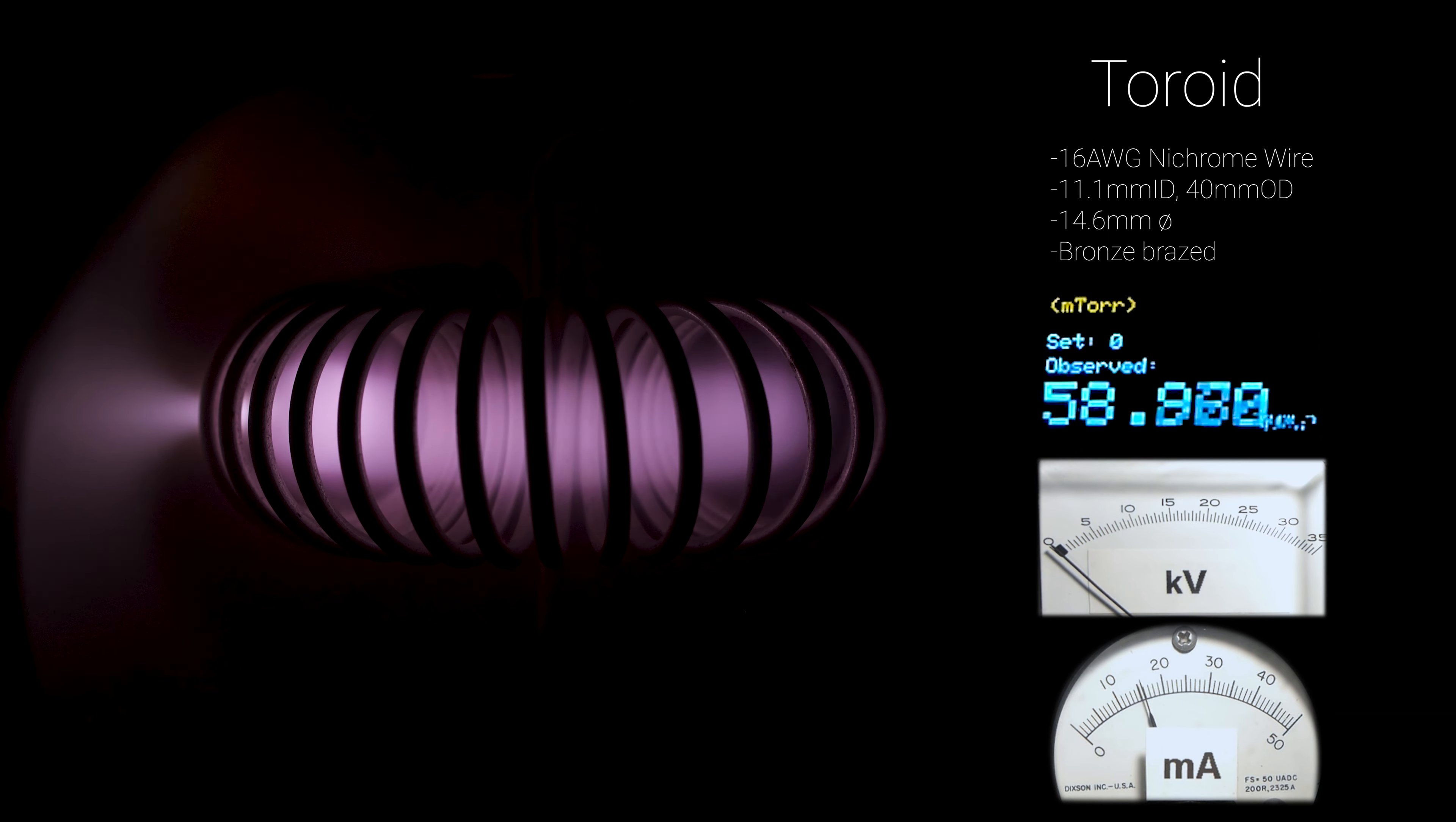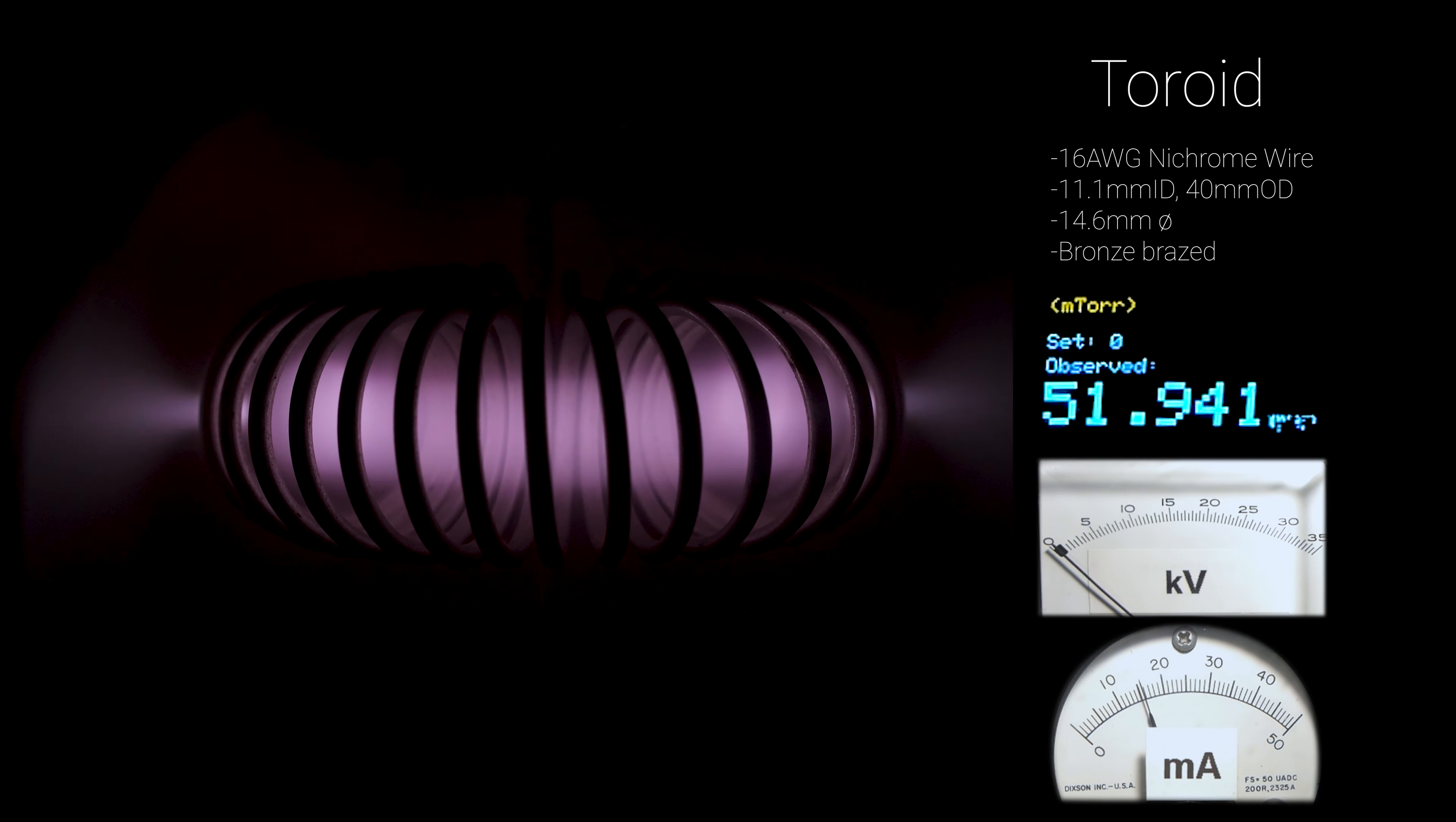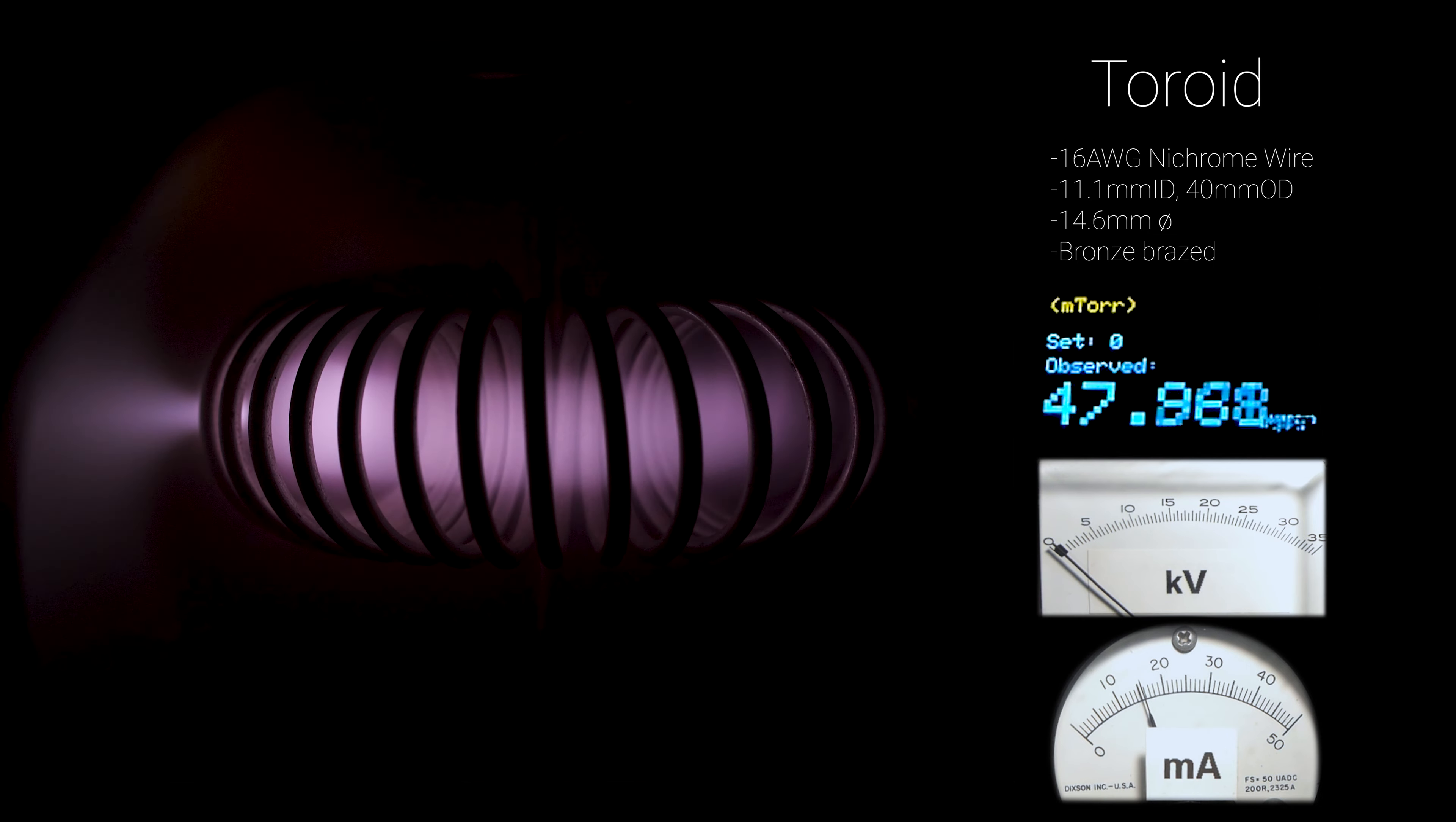As pressures dropped below 60 millitorr, the plasma became quite unstable. It looks like it oscillates between bugle jets on the left and right sides of the grid, so I'd imagine the instability has something to do with the grid's symmetry.